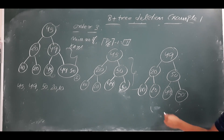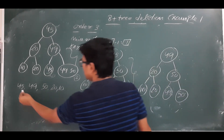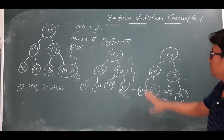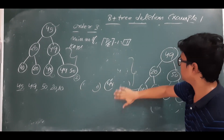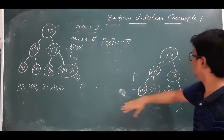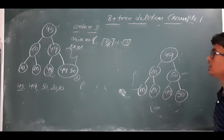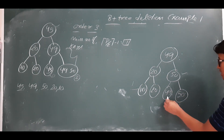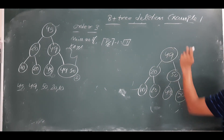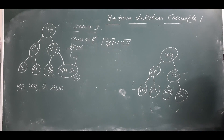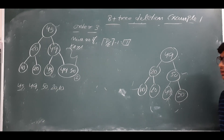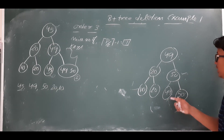We have successfully deleted 45. Now I want to delete 49. After deleting 45, the new B+ tree has 49 at the root. The value 49 appears both in the leaf node and in the root node, so we delete from the leaf node first.